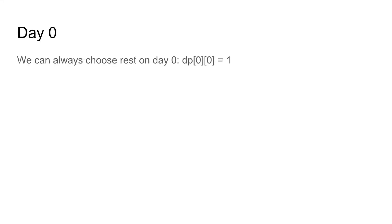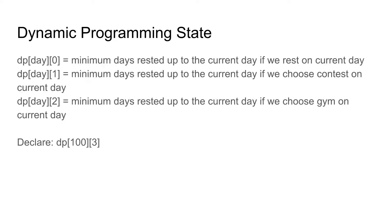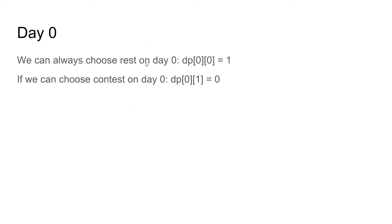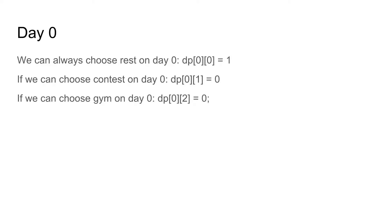Let's initialize the DP array for day 0. We could always choose rest on day 0, so dp[0][0] = 1, because the minimum days rested if you choose rest on day 0 is 1. If we can choose a contest on day 0, then dp[0][1] = 0, because we have rested no days. If we can choose gym, then dp[0][2] = 0, since only one day has passed and we have rested 0 days. Note we are using zero-based indexing.